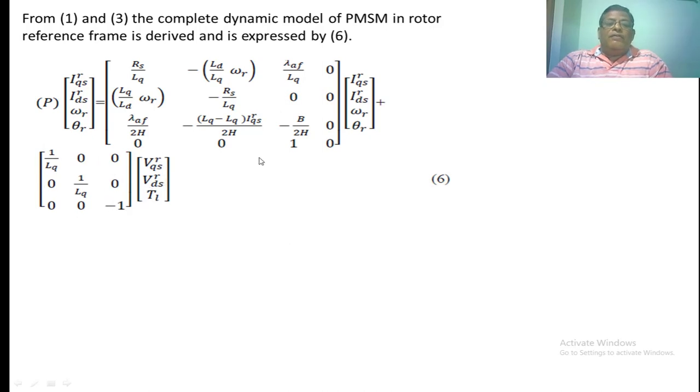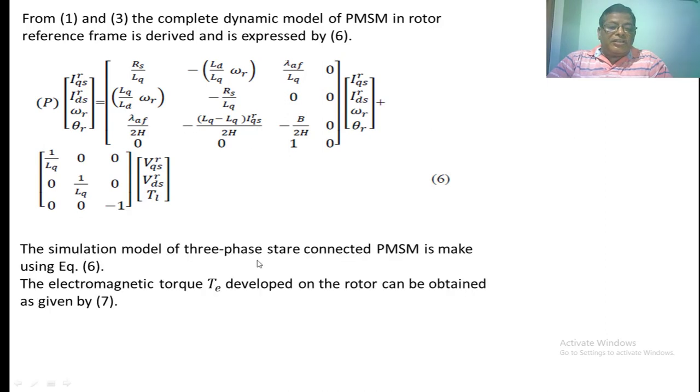From the above equation you can calculate the torque developed in the motor: equal to 3 by 2 into P by 2 into lambda AF plus LD minus LQ into IDSR into IQSR. These parameters are referred to the rotor reference frame where LD and LQ are the stator inductance in D axis and Q axis. Lambda AF is the flux linkage of phase A.